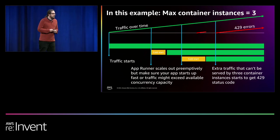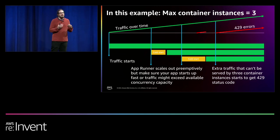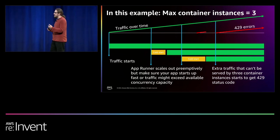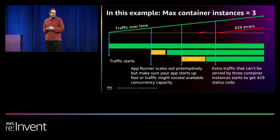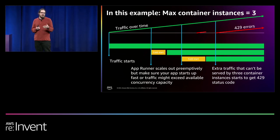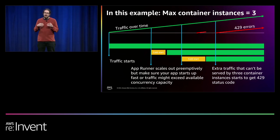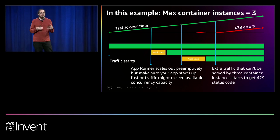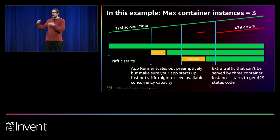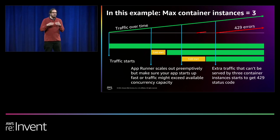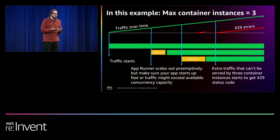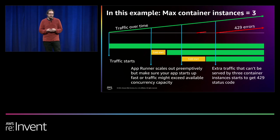One important caveat: like Lambda, AppRunner also has cold starts. It takes a certain amount of time to set up that container and get your application started. The longer your application takes to start up, the less reactive AppRunner will feel to traffic spikes. A slow cold start can result in a scattering of 429 too-many-requests errors returned to clients. It's very important to allow AppRunner to scale out to an appropriate number of containers and ensure your application starts up as quickly as possible.